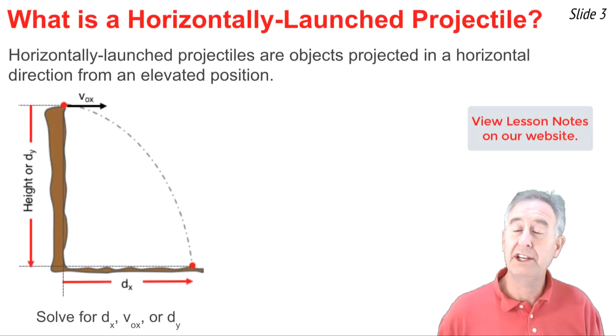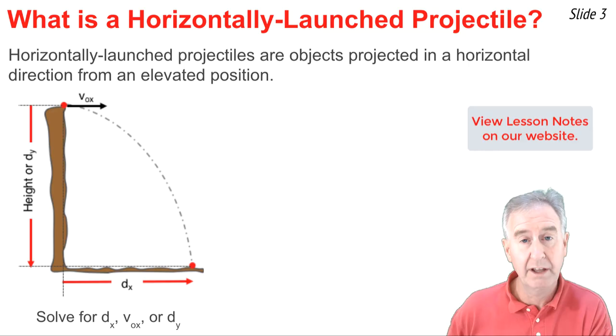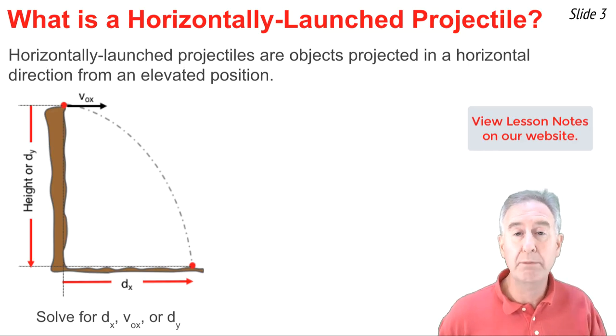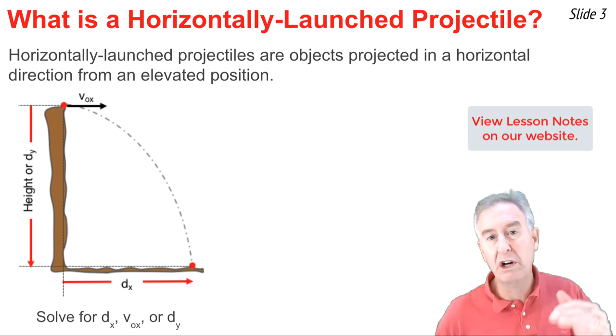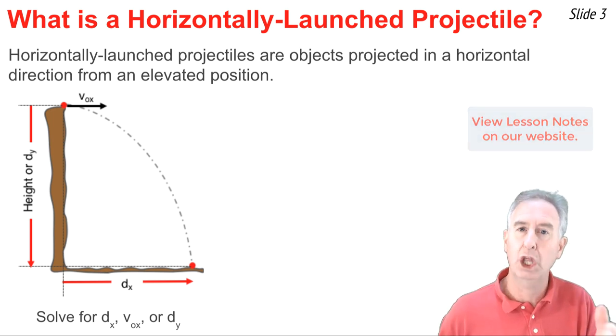Let's begin with the question: what is a horizontally launched projectile? It's simply an object that is projected horizontally from the top of an elevated position, like a tall cliff, that travels through the air acted upon only by the force of gravity. For such projectiles, what we know is that originally it's moving only horizontally. It's horizontally launched.